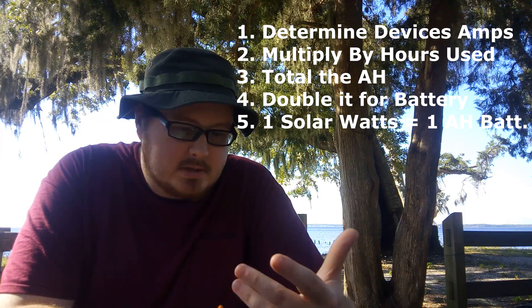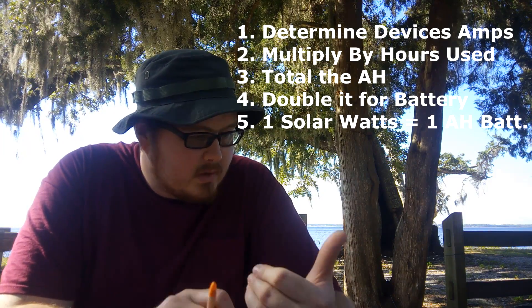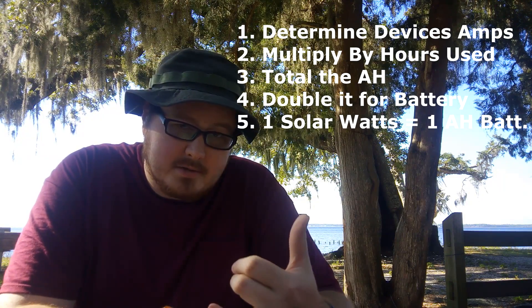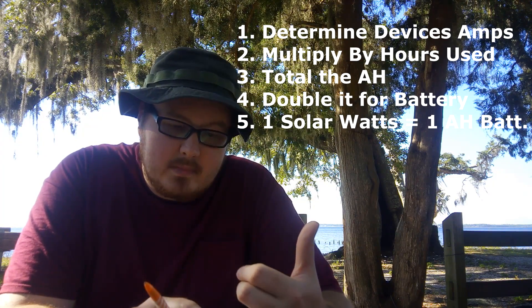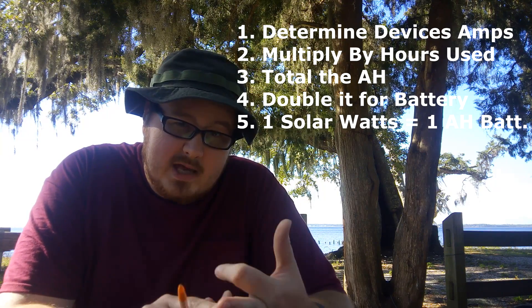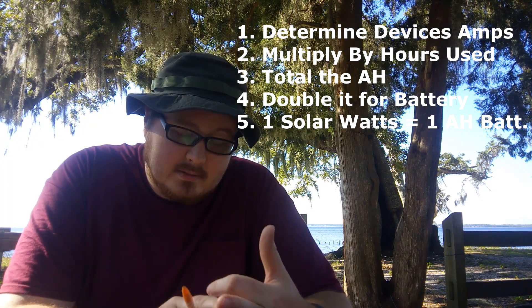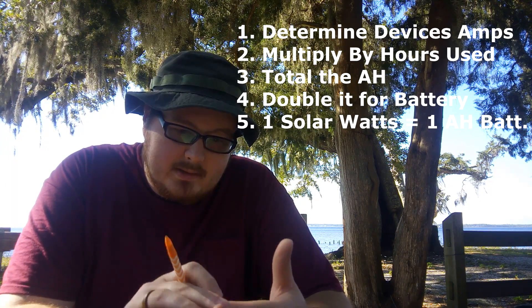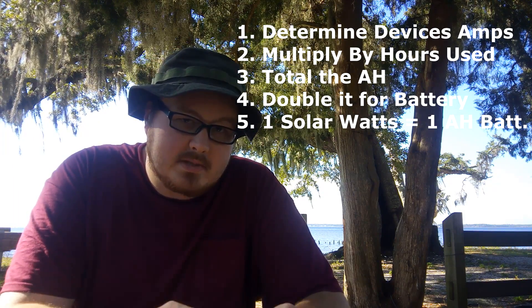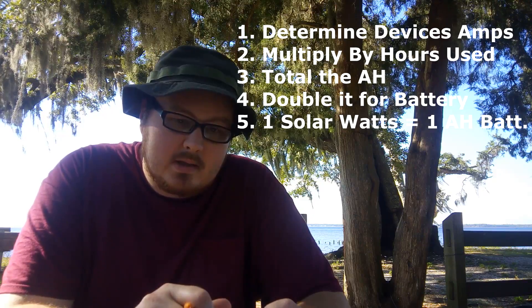In summary: take all your appliances, find out how many amps they use and how many hours you use them, and add it all up. That gives you half the amp hours you need for your batteries — so double that number. That determines both how much battery capacity you need and how much solar you need.